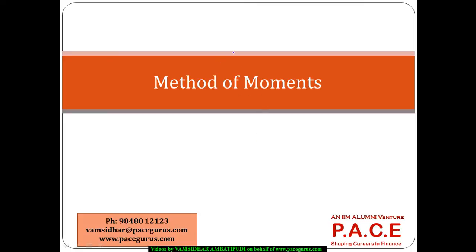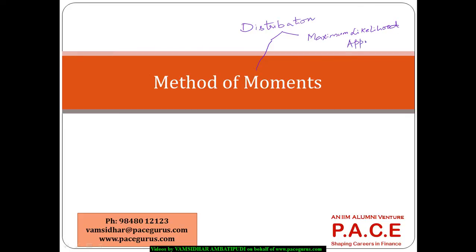Let's spend some time understanding the estimation of parameters of a particular statistical distribution. We know there are two major methods, though we can bring in many more. One such method is the method of moments, whereas the other one is the maximum likelihood approach. Though we can also talk about the method of percentiles, method of quantiles, and a few other approaches to estimate parameter values.